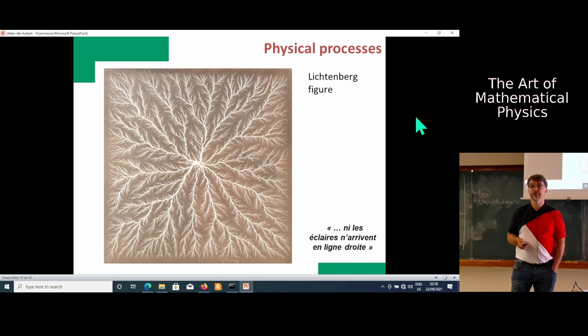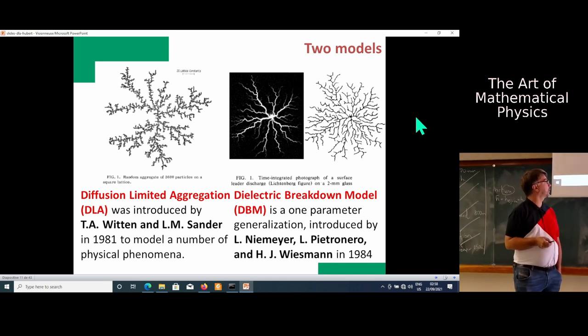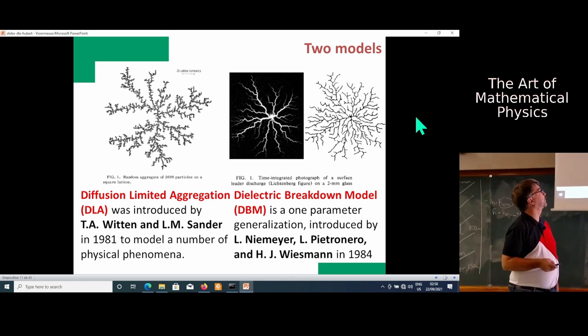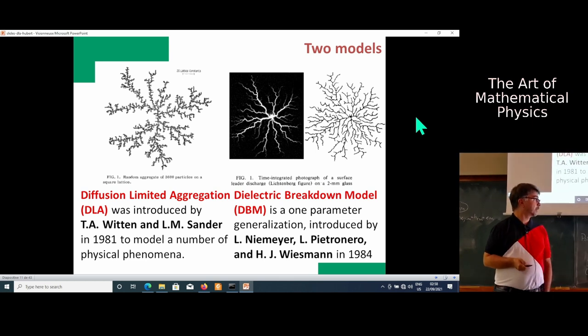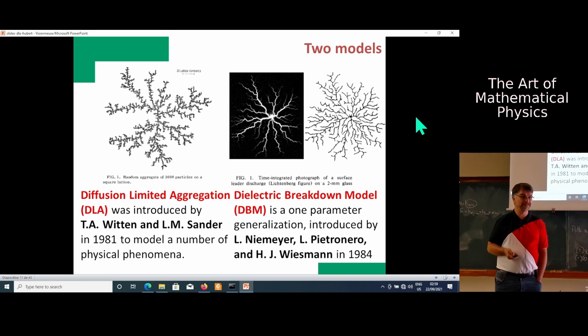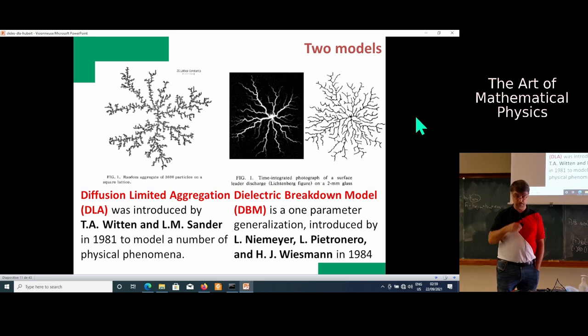There are two models which were proposed to treat this. One was proposed called diffusion limited aggregation. You aggregate a crystal, but probabilities how you go are governed by diffusion. Some time later it was generalized to the electric breakdown model about 40 years ago. It's really interesting that from a mathematician's viewpoint, there is but one theorem by Harry Kesten. Physically, you can find many papers with contradictory conclusions.